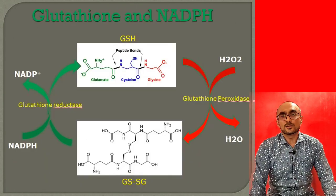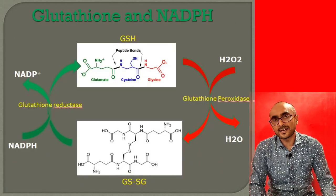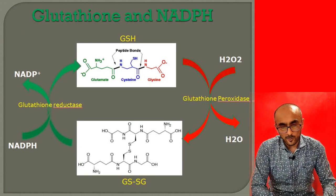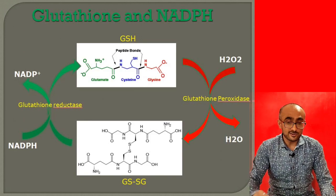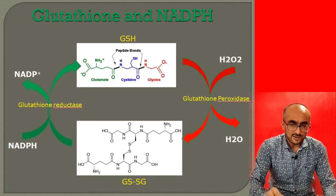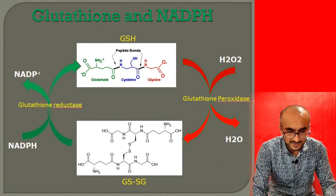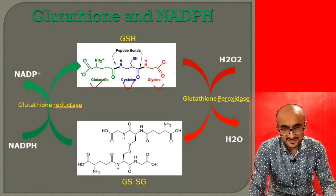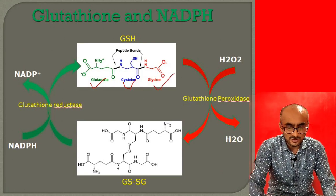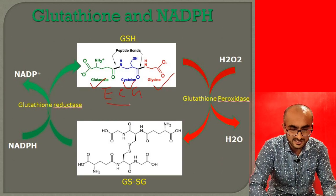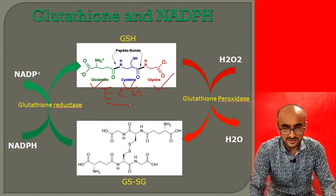NADPH is used to get rid of reactive oxygen species, and glutathione plays a major role in this process. Glutathione is a tripeptide formed by glutamic acid, cysteine, and glycine amino acids — it can be abbreviated as ECG, where E stands for glutamate, C for cysteine, and G for glycine. These amino acids are bonded together through peptide bonds.